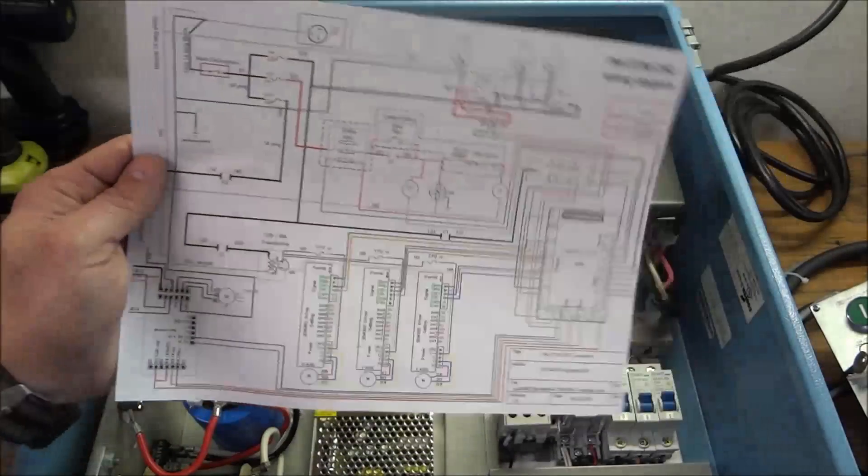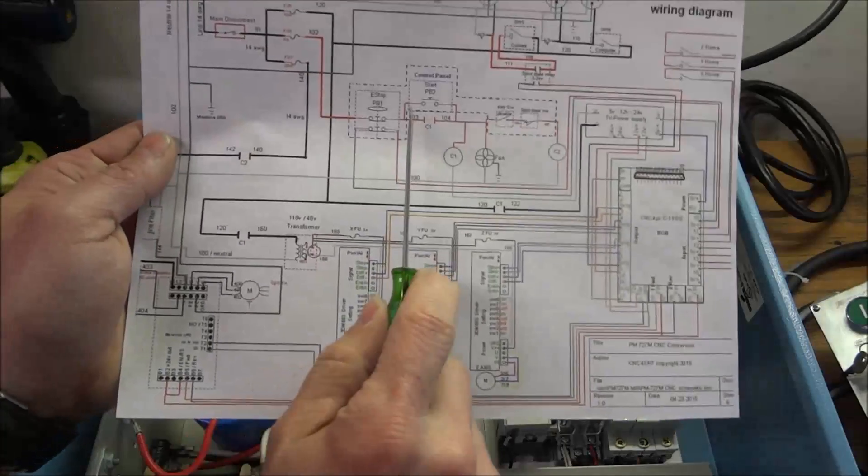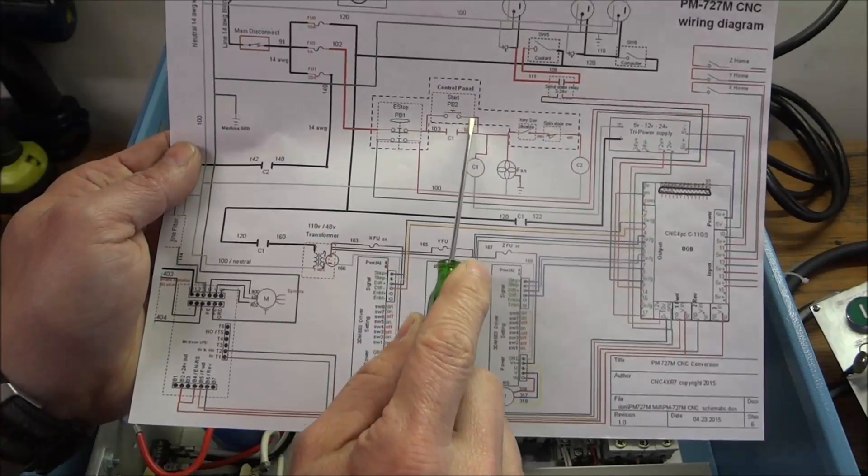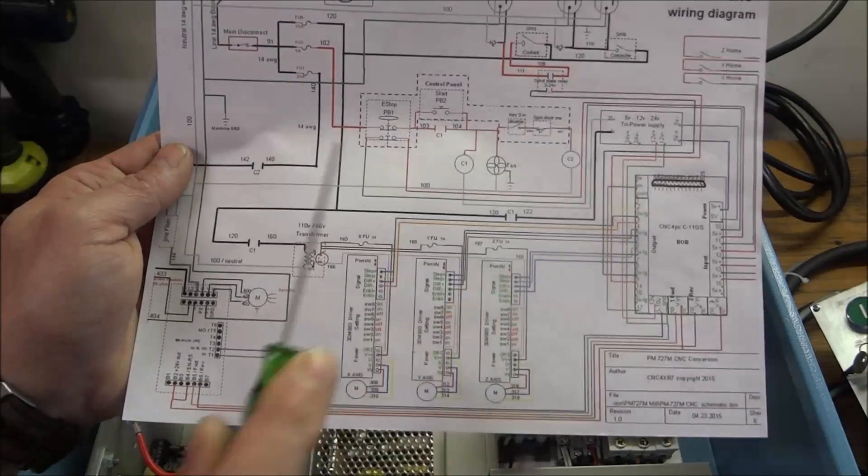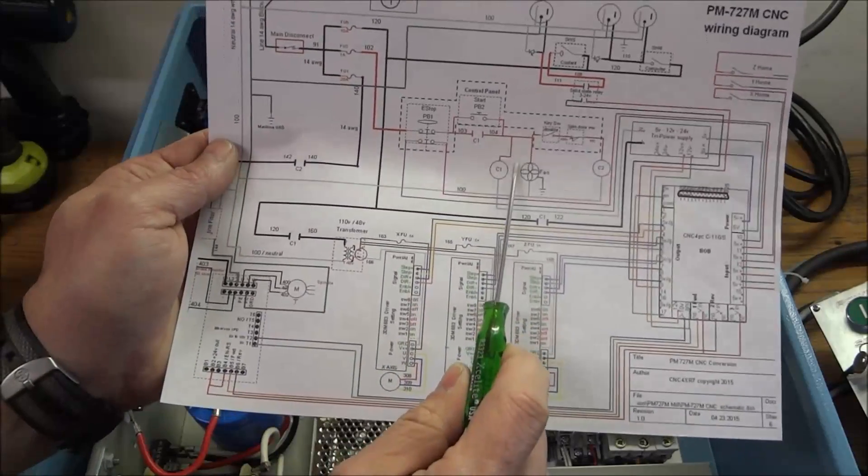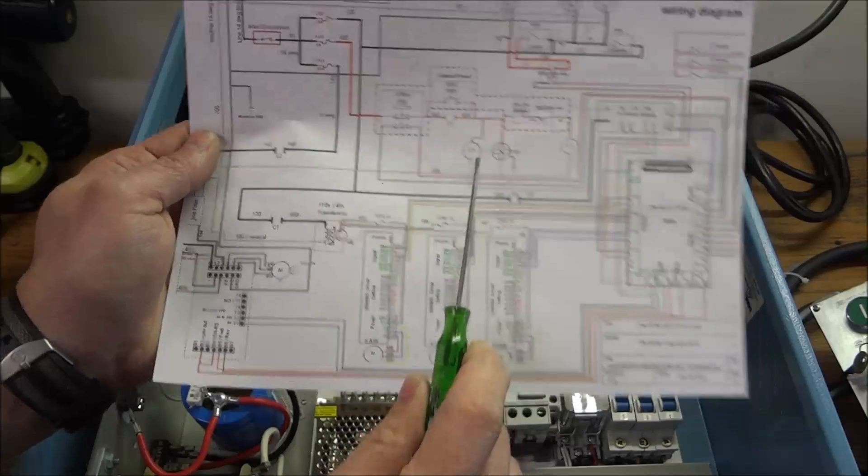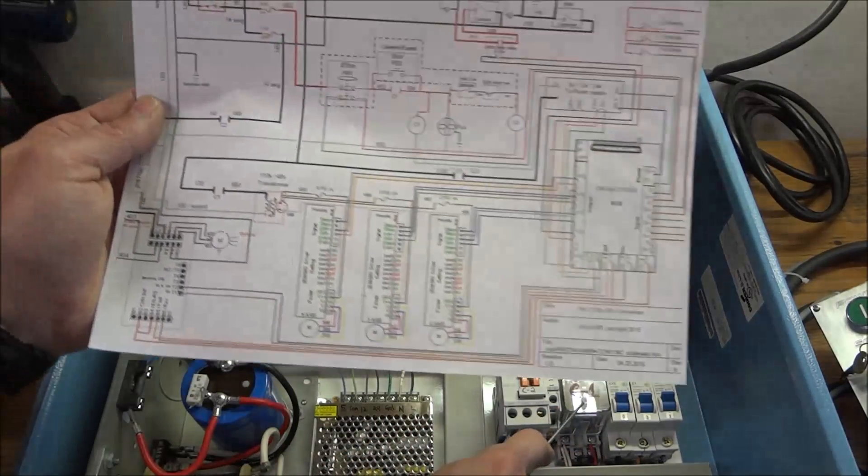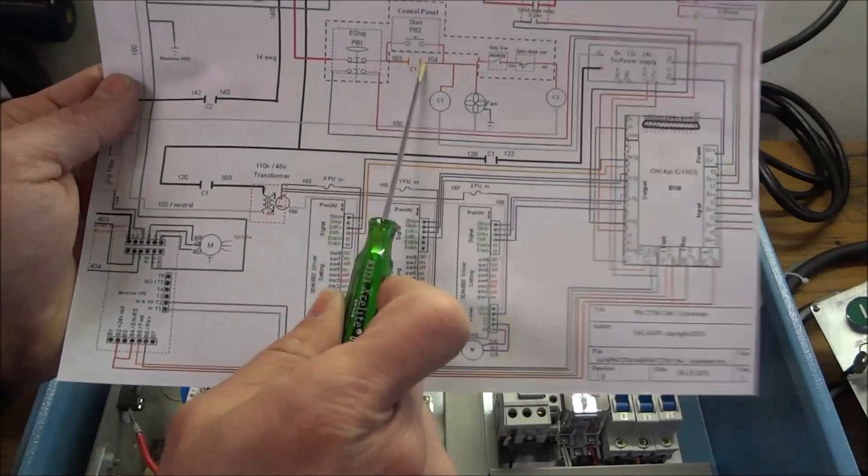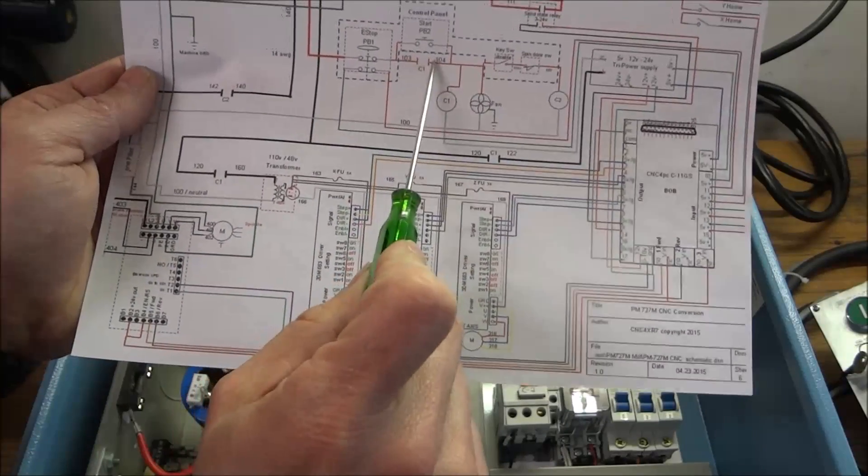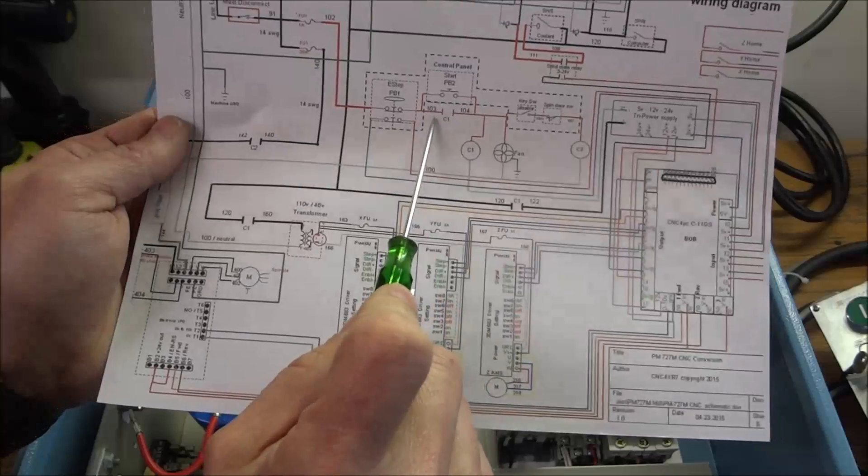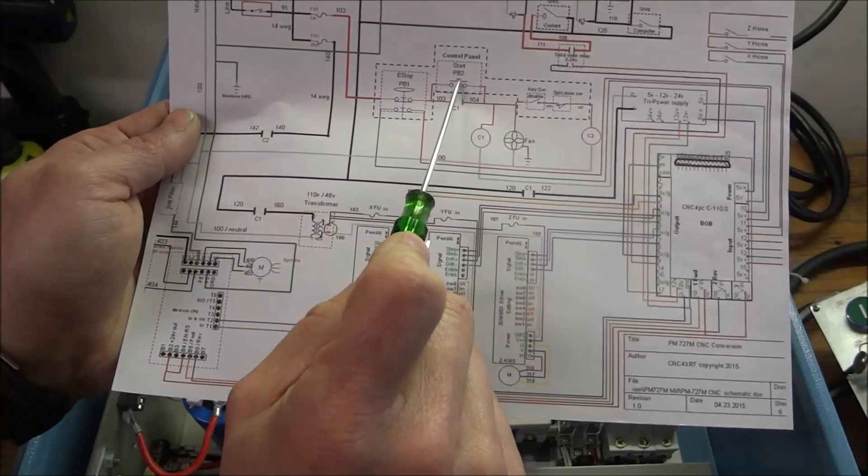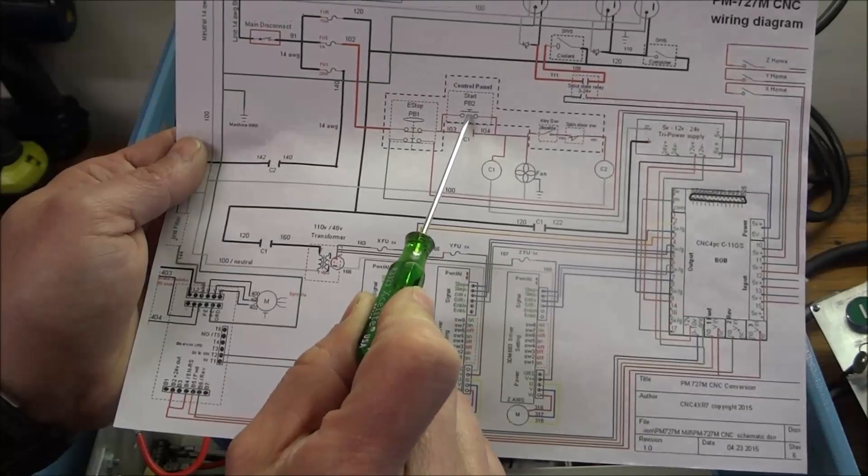Now once we press the power on button, 110 volts will go through the button momentarily as long as the button is pressed. And power will be applied to our C1 relay coil. Once that coil is energized, it will close these sets of contacts right here. These are our holding contacts. When these are closed, then when the push button is released,